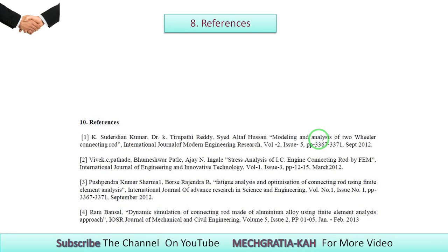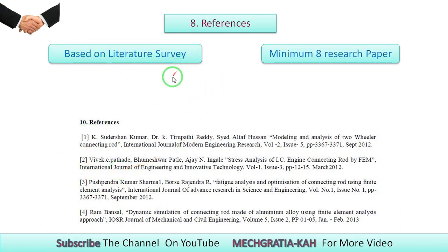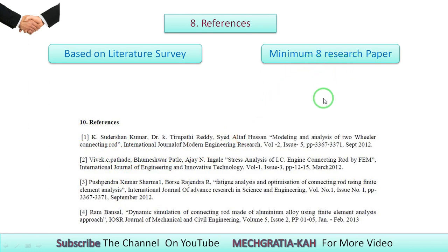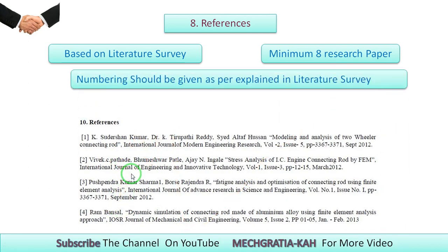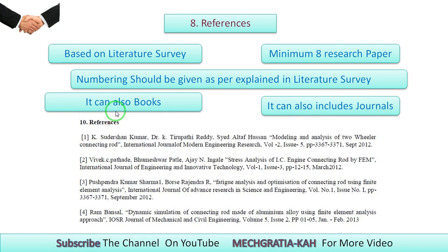The next important topic is references. The references should be completely based on the literature survey — the same references you mentioned in your literature survey should appear here. You should include a minimum of eight references. The numbering in the references should match exactly what you used in the literature survey. References can include books as well as journals.